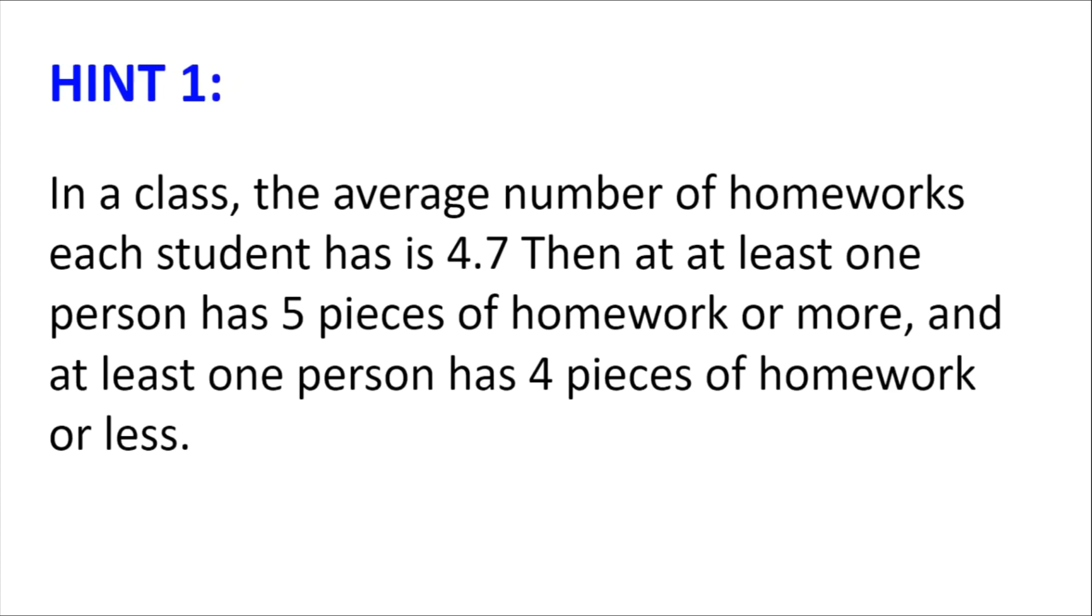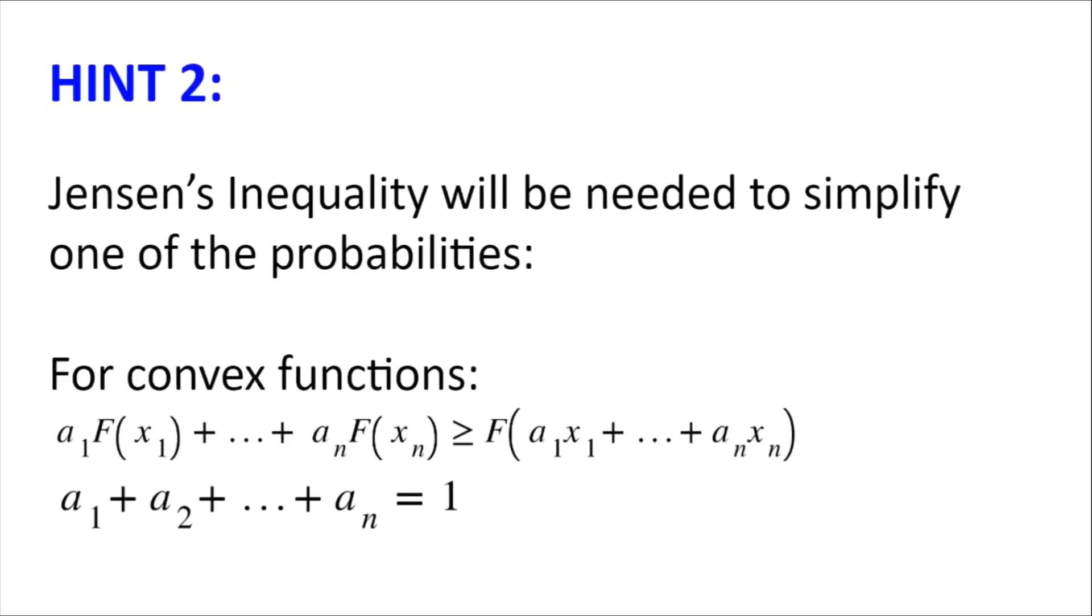Hint number two. Jensen's inequality will be needed to simplify one of the probabilities, and it states that for convex function f, a1 multiplied by f of x1 plus a2 multiplied by f of x2 all the way to plus an multiplied by f of xn is greater or equal to f of a1x1 plus a2x2 all the way to plus anxn.